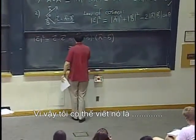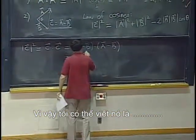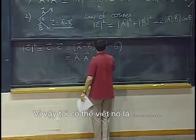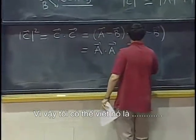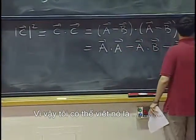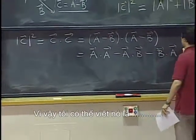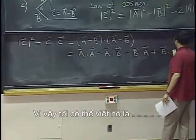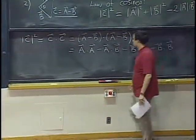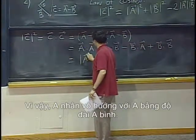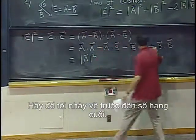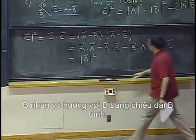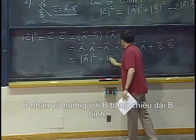So I can write that as a dot a minus a dot b minus b dot a plus b dot b. So a dot a is length a squared. Let me jump ahead to the last term, b dot b is length b squared.